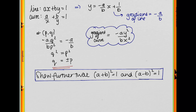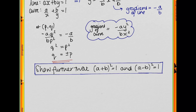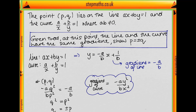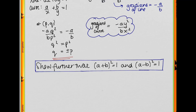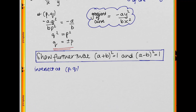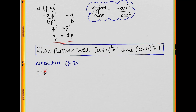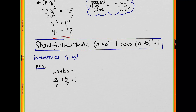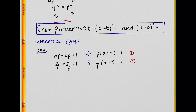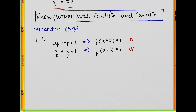We're also asked to show that (a + b)² = 1 and (a - b)² = 1. We haven't yet used the fact that (p, q) lies on both the line and the curve. Considering the case p = q first, we have ap + bp = 1 and a/p + b/p = 1. Factoring out p gives p(a + b) = 1 and (1/p)(a + b) = 1. Multiplying these two equations together gives (a + b)² = 1.